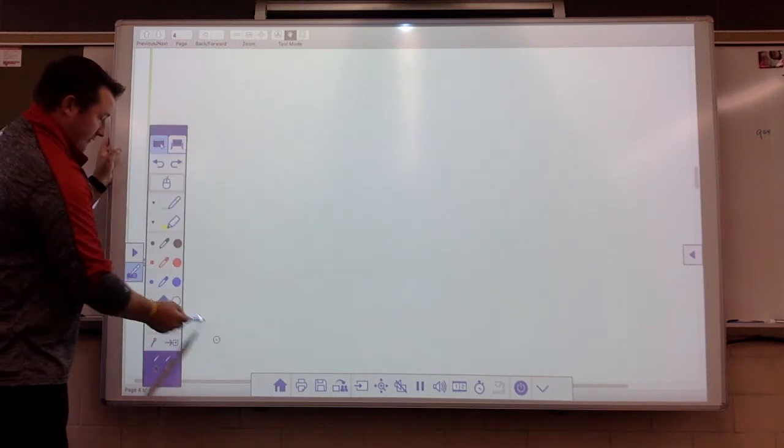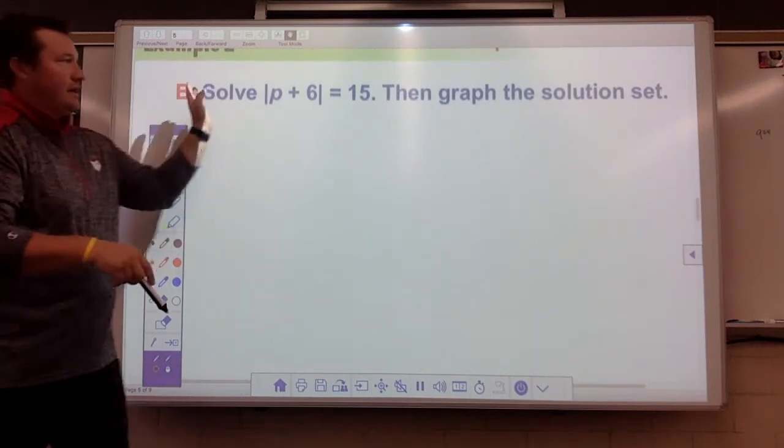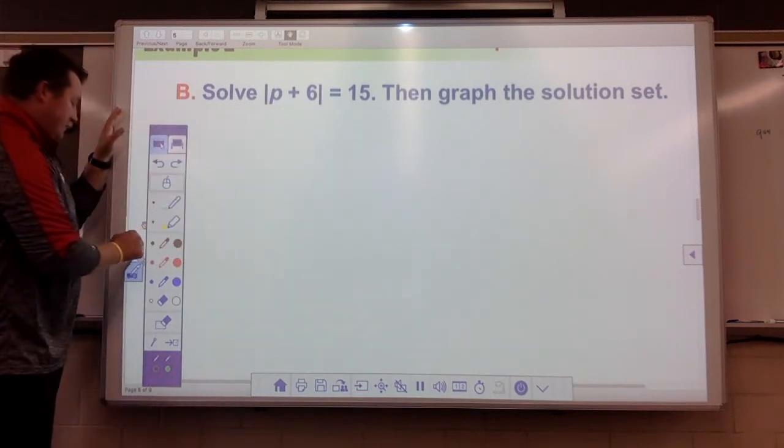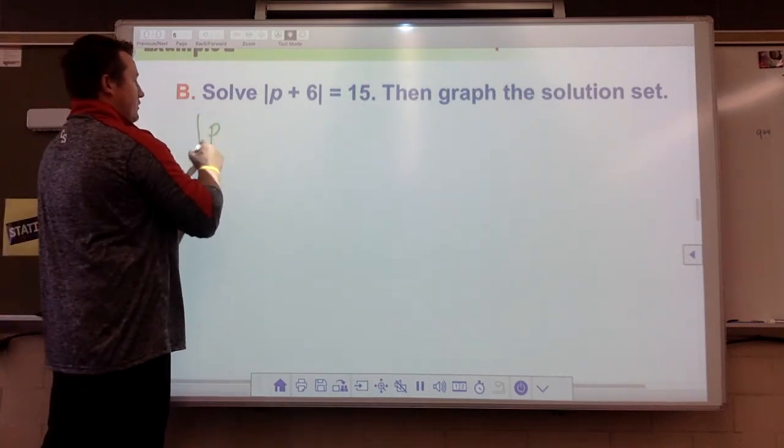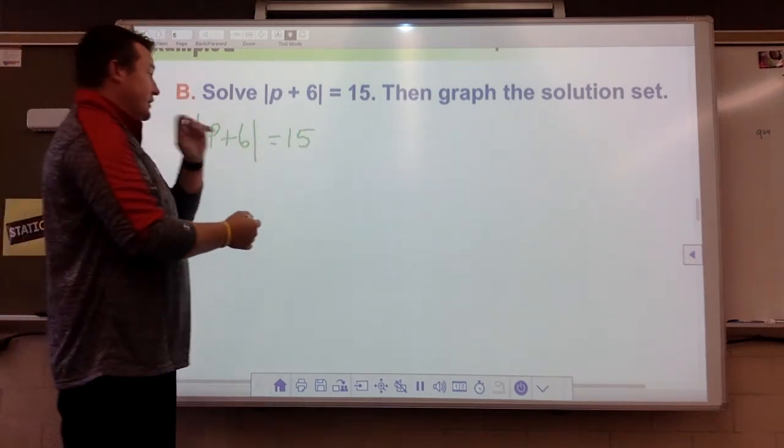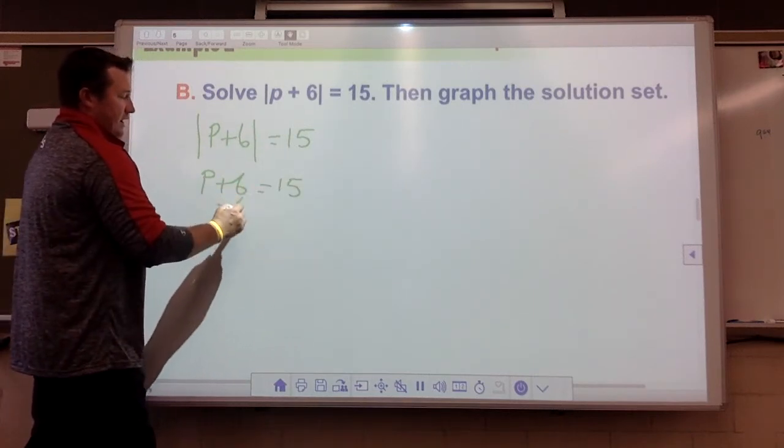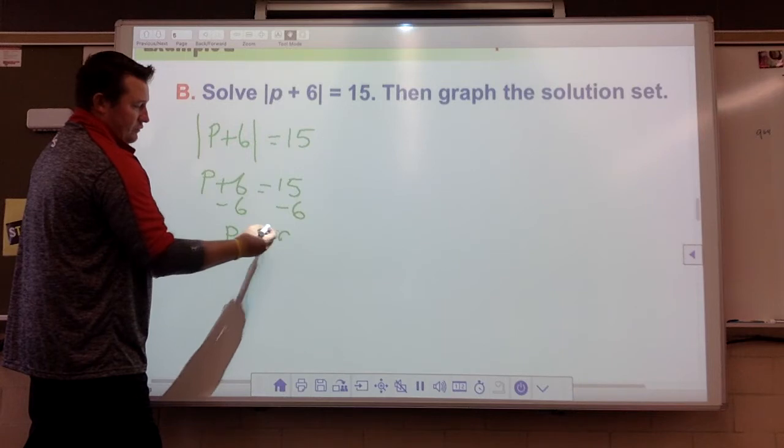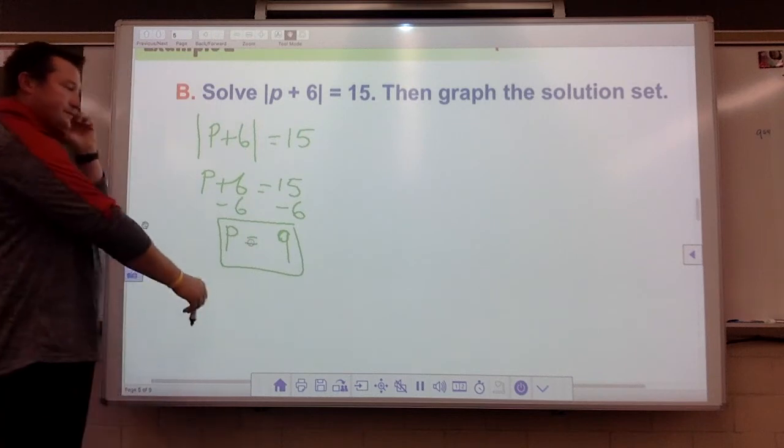Sure, we can keep graph it, I suppose. Absolute value expression of P plus six is equal to 15. Case one, case two, folks. P plus six. It's ready for me to go ahead and make case one and case two. Here's case one. We'll go ahead and solve it. Equals 15. Subtract six. Subtract six. 15 minus six. Just to be the number nine.